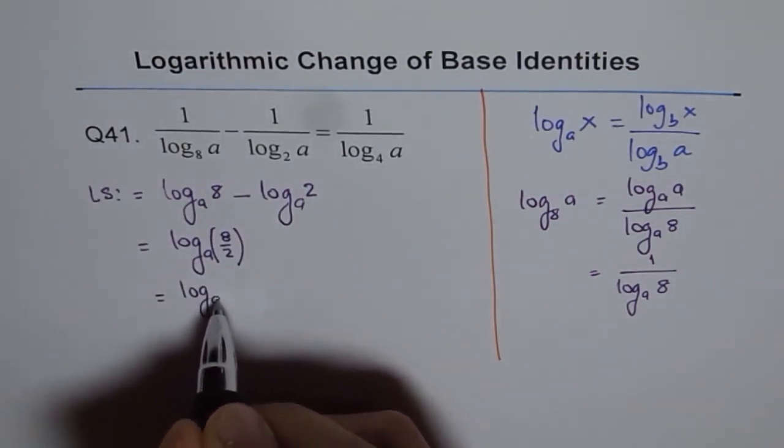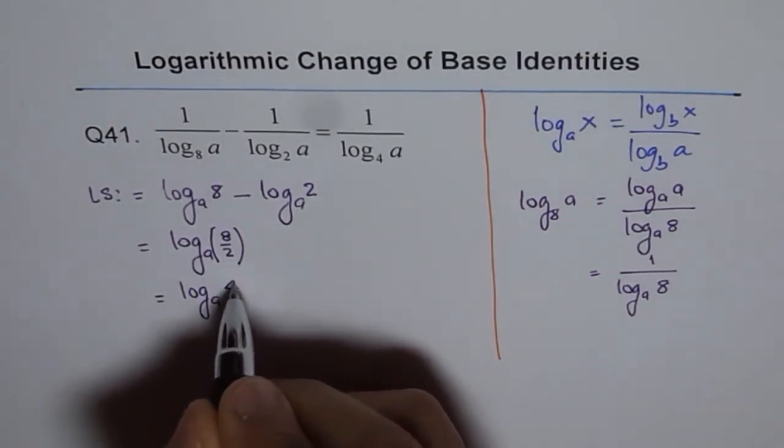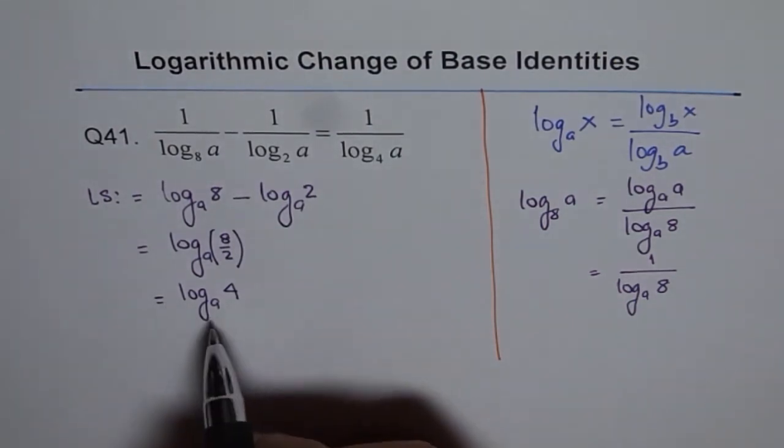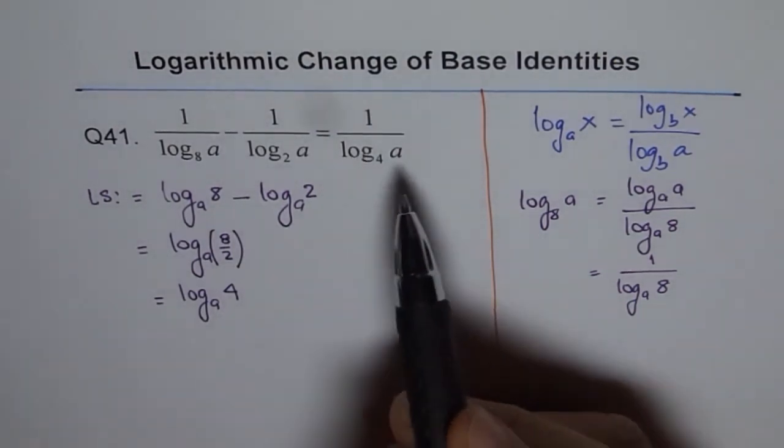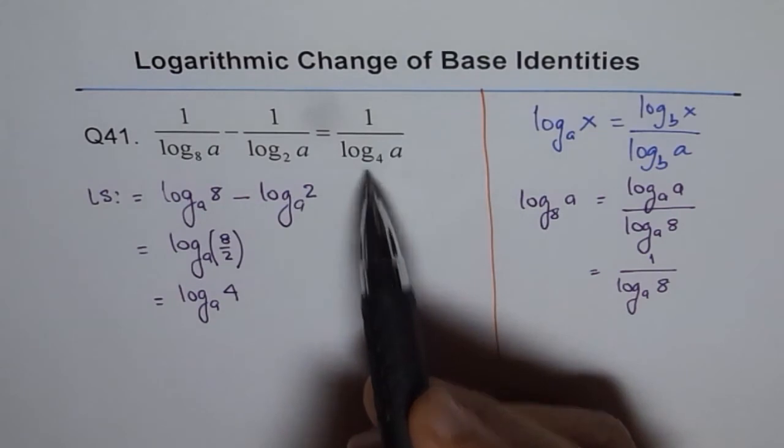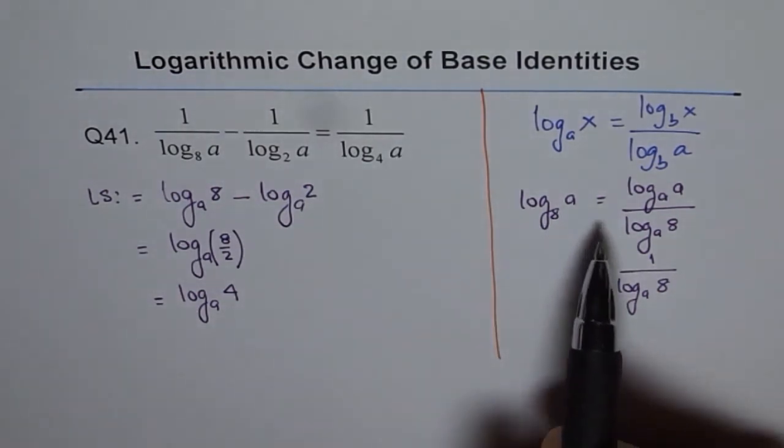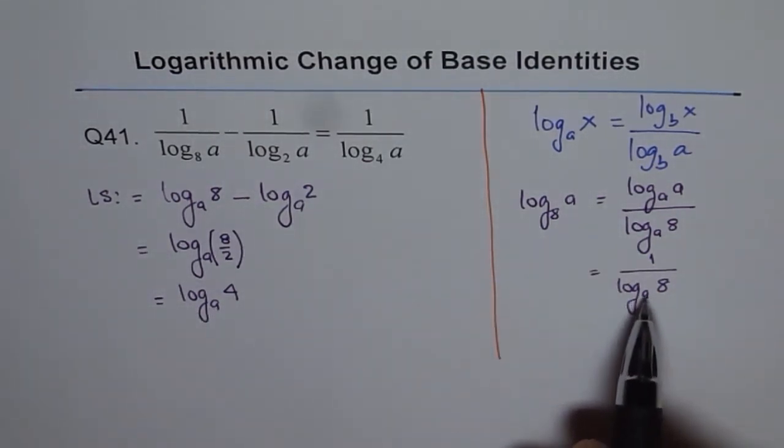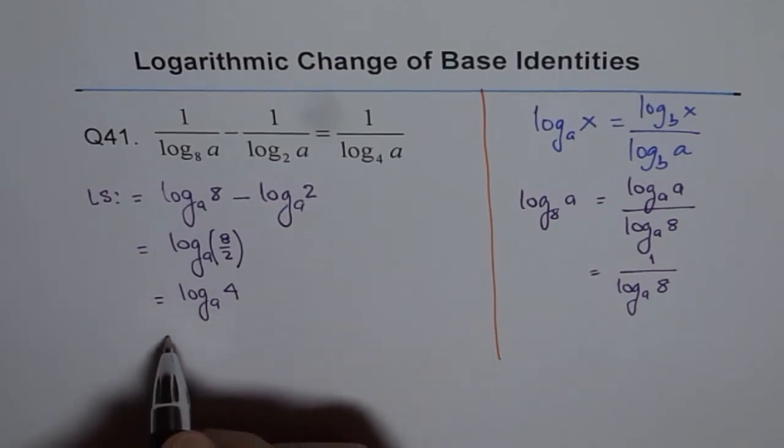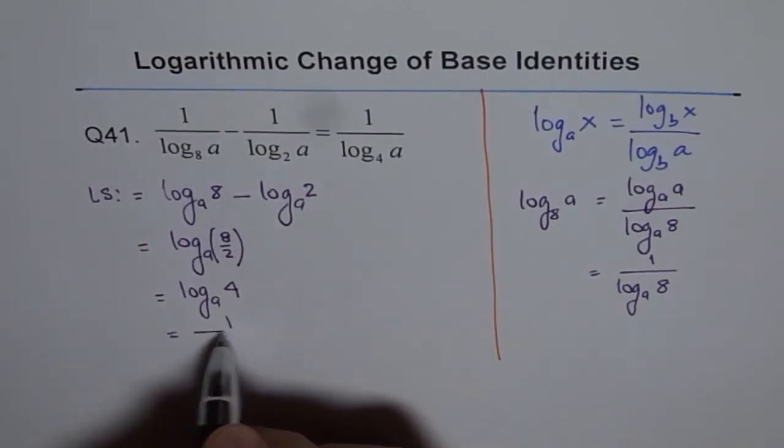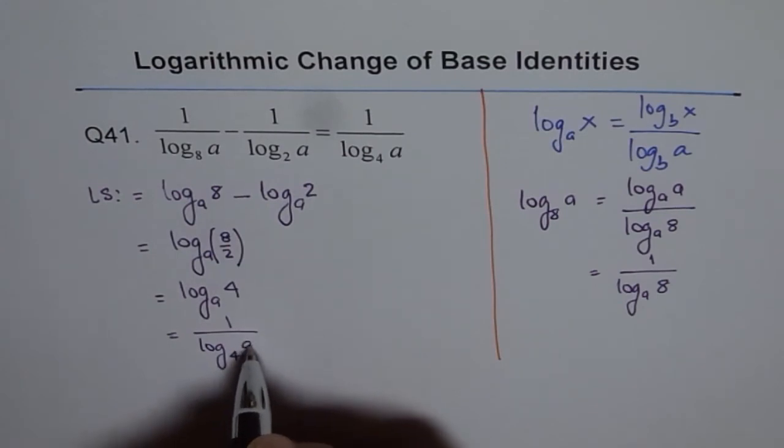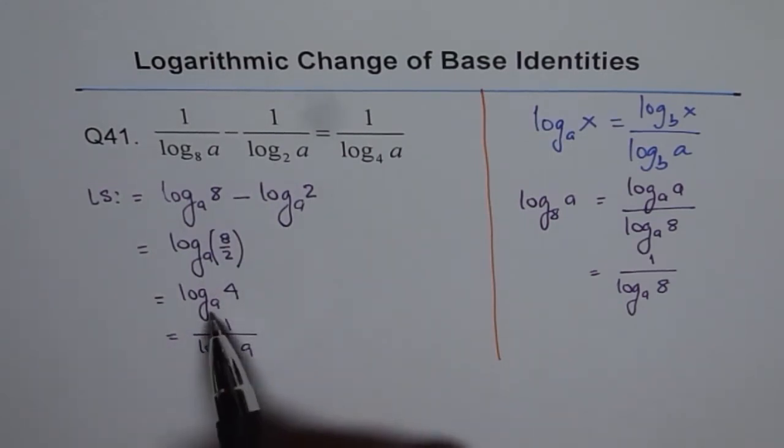We got log base a of 4. On the right side, we have a reciprocal of this, so we can now see that this could be written in a similar fashion as equal to 1 over log base 4 of a. When you reverse it, it becomes 1 over that.